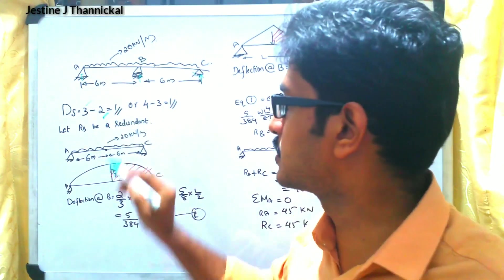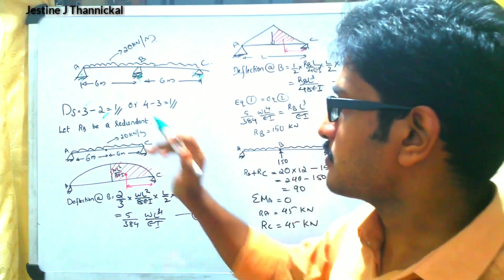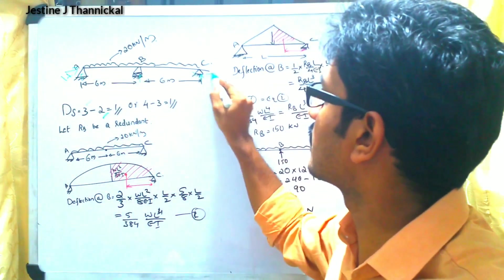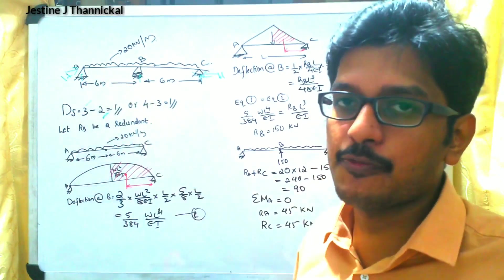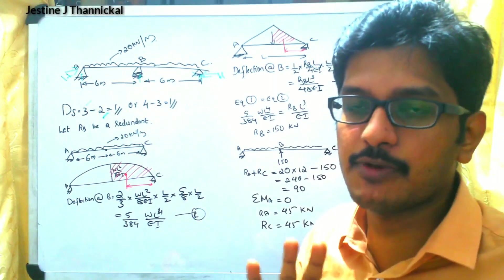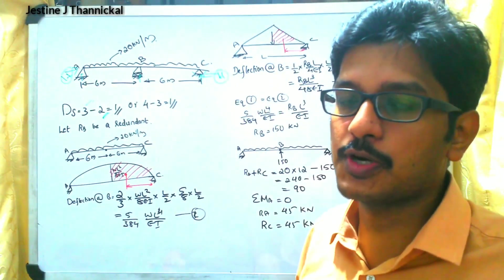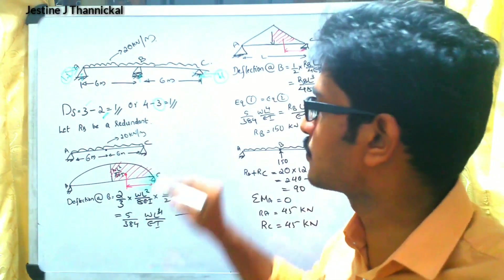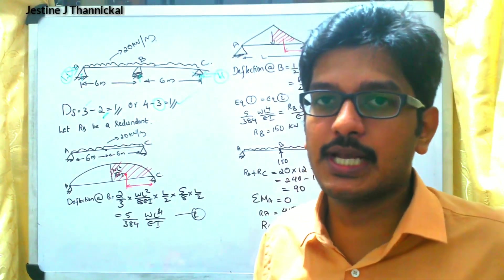Alternatively, both ends have a horizontal component, making total reactions 4 (3 vertical plus 1 horizontal), and the number of equilibrium equations is 3. So 4 minus 3 equals 1. There is only one degree of static indeterminacy.